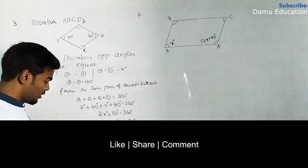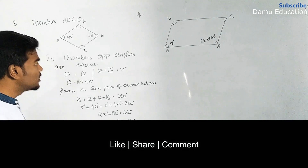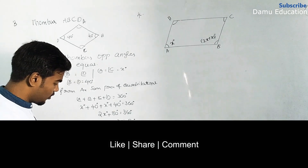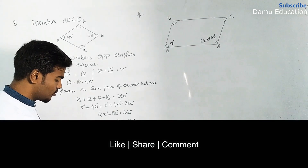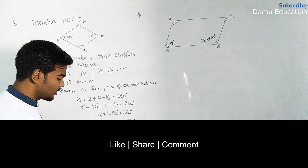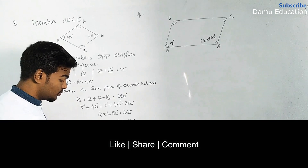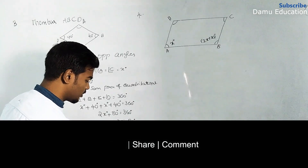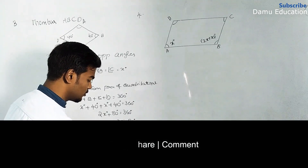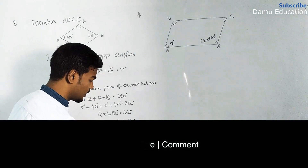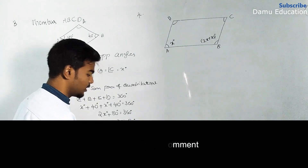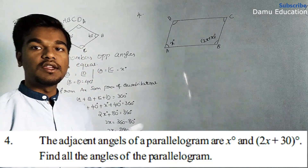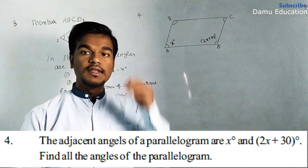Therefore, angle A equals 140 degrees, angle B equals 40 degrees, angle C equals 140 degrees, and angle D equals 40 degrees. This is how we solve the problem.